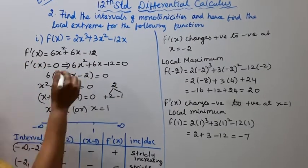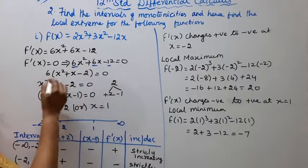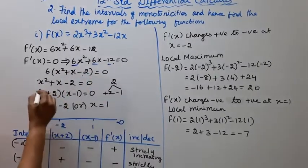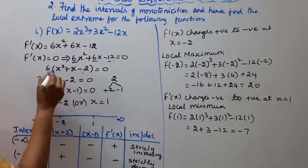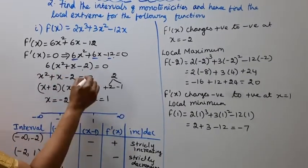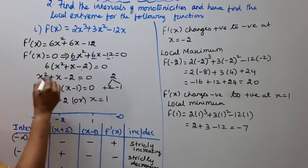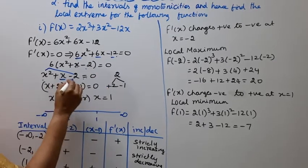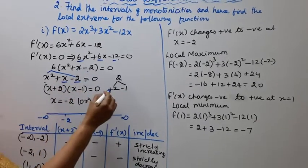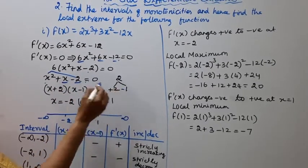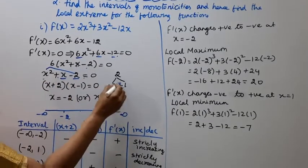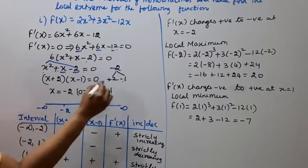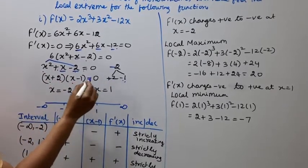All the way 6 is common, x square plus x minus 2 equal to 0. If you factorize, 1 into minus 2, sum is minus 1, plus 2 into minus 1, product is minus 2, equal to 0.